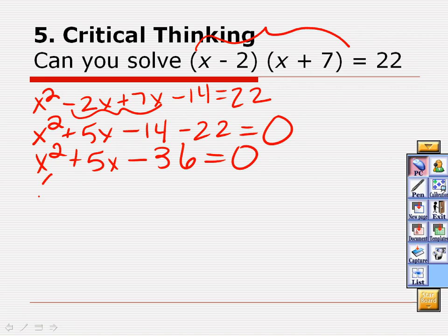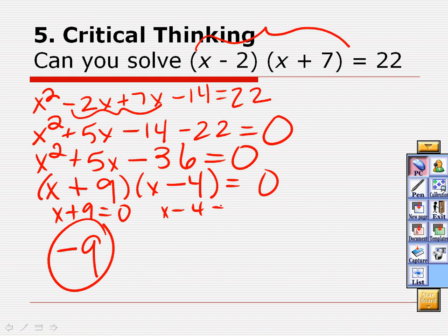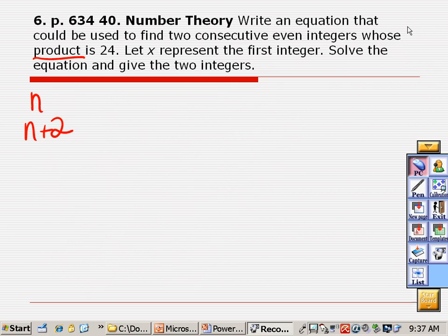Negative 14 and negative 22 is negative 36 equals 0. And then that gives me, multiply to give me negative 36, add to give me 5. Okay, she said negative 9, oh, she means positive 9, negative 4. This answer is going to be x plus 9 equals 0, which gives me a negative 9. And this one is x minus 4 equals 0, which gives me a positive 4. Now do I get rid of either of these two answers? No. I'm not trashing them because this is not about length or width or that type of thing.